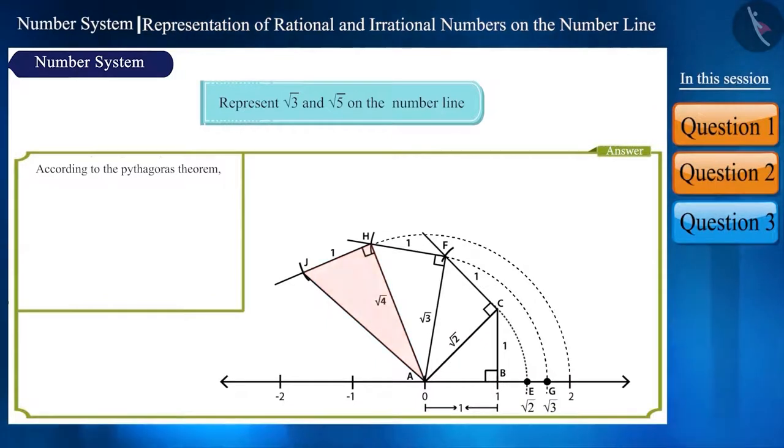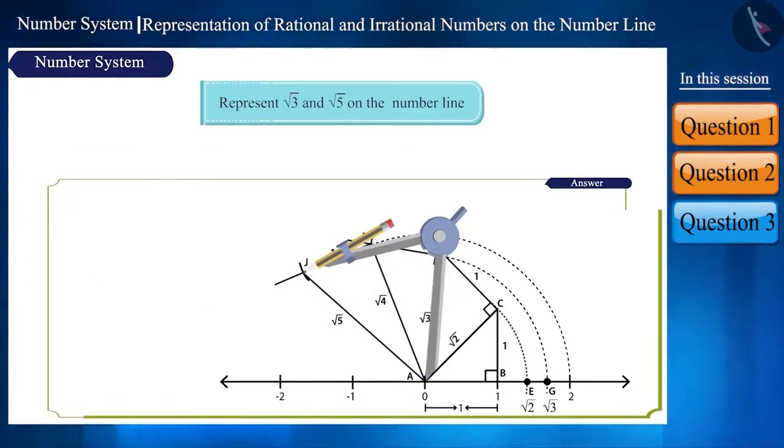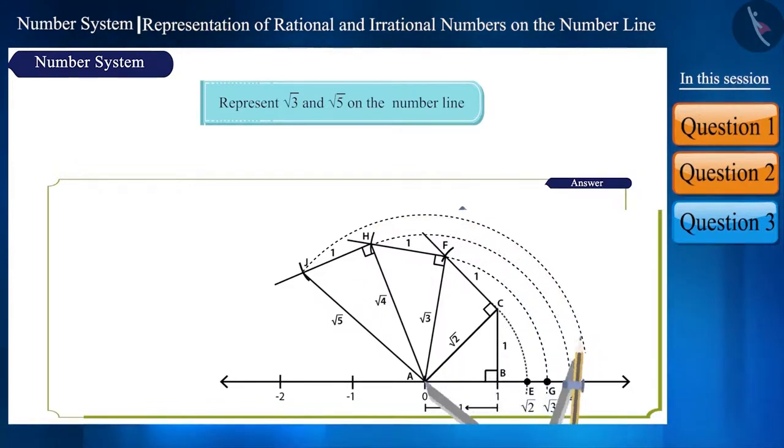We get a right-angled triangle AHJ. In triangle AHJ using Pythagoras' theorem, we will get AJ as root 5. Measure the length AJ using a compass and keeping A as center, draw an arc on the number line which cuts it at point K. Point K represents root 5 on the number line.